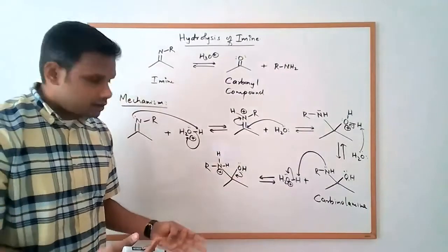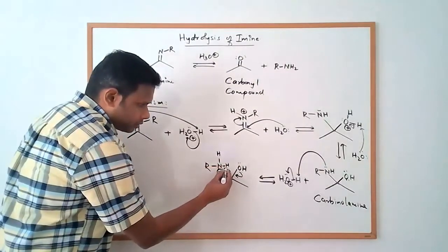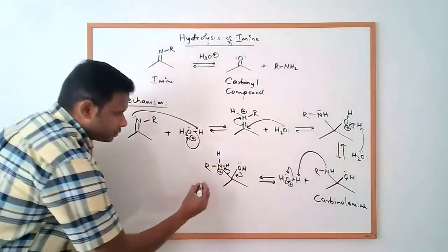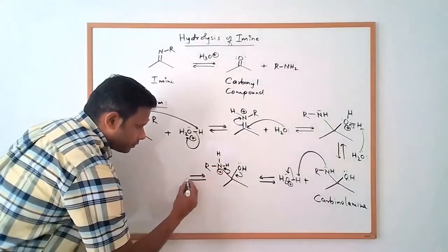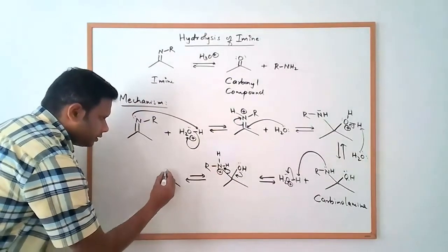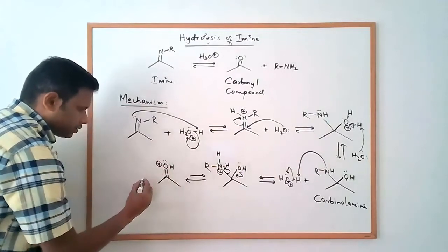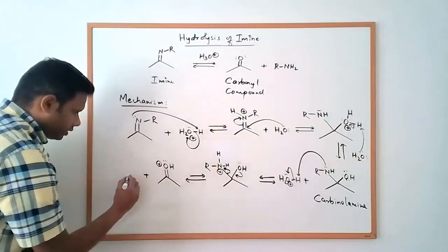and it can assist the loss of that nitrogen so this bond goes to the nitrogen, nitrogen is going to get its lone pair that way. Again a reversible reaction, what we get is double bond O-H, one lone pair, formal charge plus we get R-NH2 so we get the amine out.